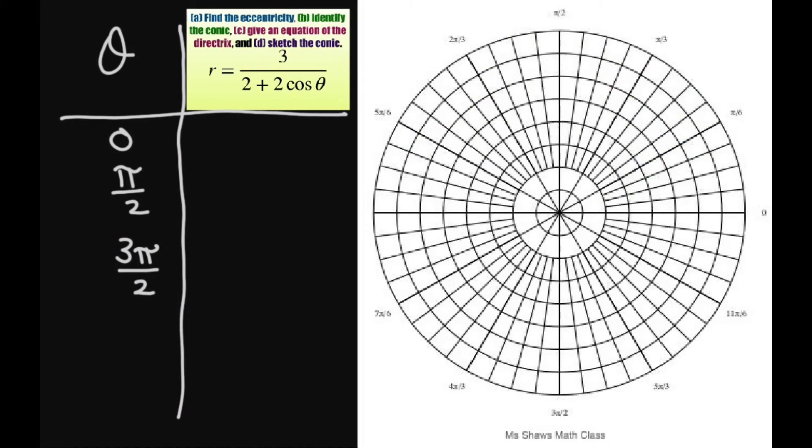Let's plot some points. If I have theta equals 0, cosine of 0 is 1, so that's going to be 3 fourths. I'm going to let this be 3 fourths right here.